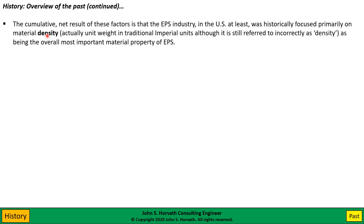The bottom line is that the EPS industry — certainly here in the United States — has historically, going back to the 1950s, focused primarily on material density. Here in the United States we use unit weight in pounds per cubic foot, while throughout the rest of the world it's properly expressed as density in kilograms per cubic meter. U.S. manufacturers still incorrectly call unit weight "density." I emphasize this because as civil engineers, density and unit weight are not the same thing — especially since we use EPS geofoam in both static and dynamic applications: static applications we're interested in unit weight; dynamic applications we're interested in density.